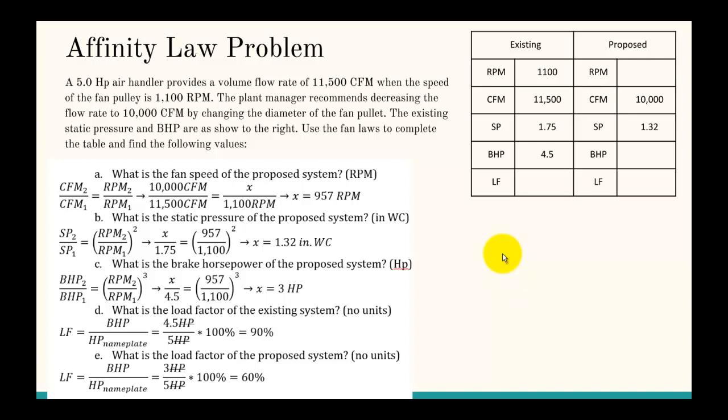The first one is what is the fan speed of the proposed system? We use this affinity law and plug in the values and solve for X, and the new speed would be 957 RPM. What's the static pressure? Same thing except here we use this affinity law and solve for X. Same thing with the brake horsepower.